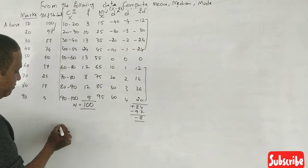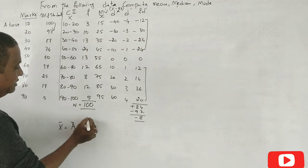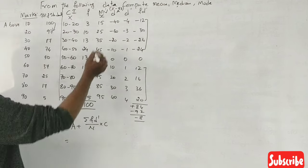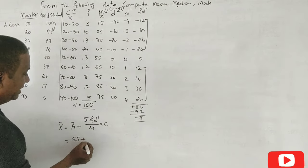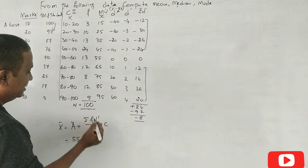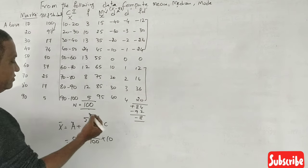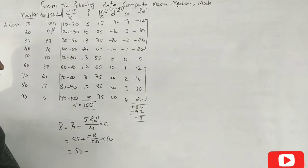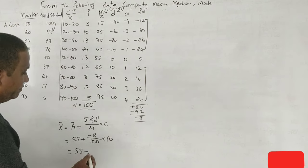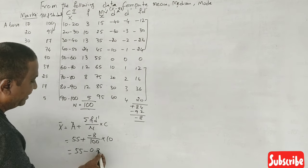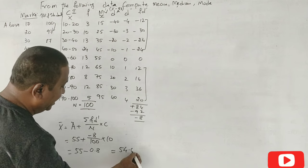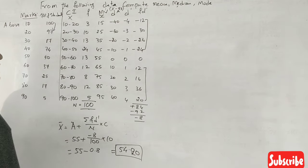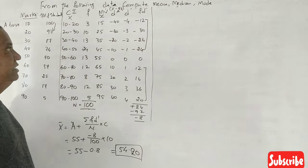Mean. First mean calculate model. A plus summation F D dash divided by N into C. Correct? Yes. A is and code it the way, 55 and code it the way. F D dash is minus 8, divided by C. This is 100. Difference between the class interval is 10. Now the 55, plus into minus. Minus. 8 divided by hundred is 10, 0.8. 55 minus 0.8, 54.2. This is see the mean. Correct? Here is the mean.